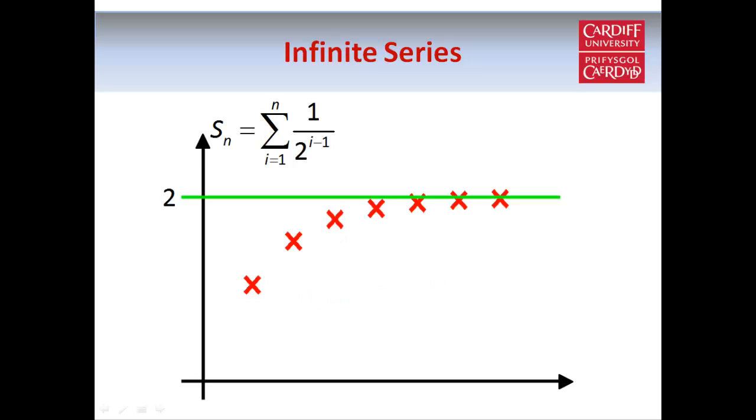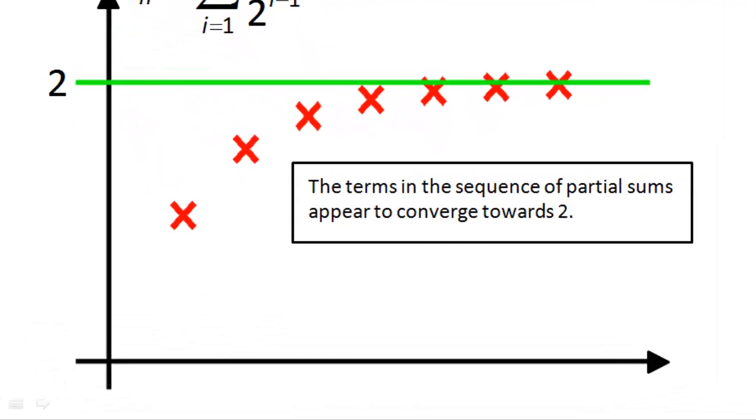And if we draw a green line at the value of 2 on the vertical axis, you can see that the terms in our sequence of partial sums appear to approach a value of 2 as the sequence continues. And as we'll see on the next few slides, it's possible to prove that this sequence does converge to 2. But the question is, if we know that the sequence of partial sums for this series converges to 2, what does that tell us about the series itself?